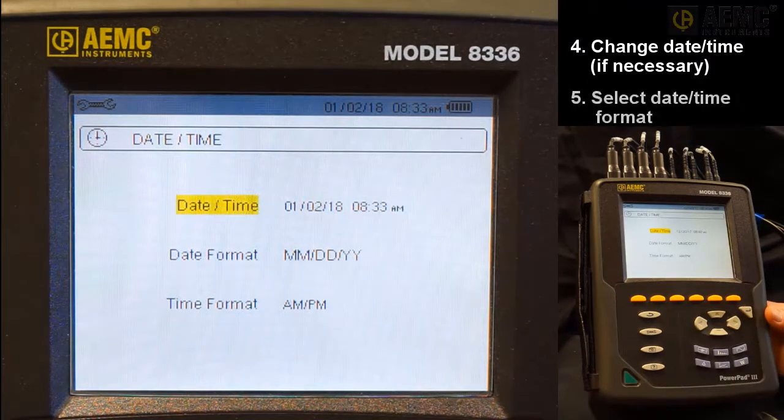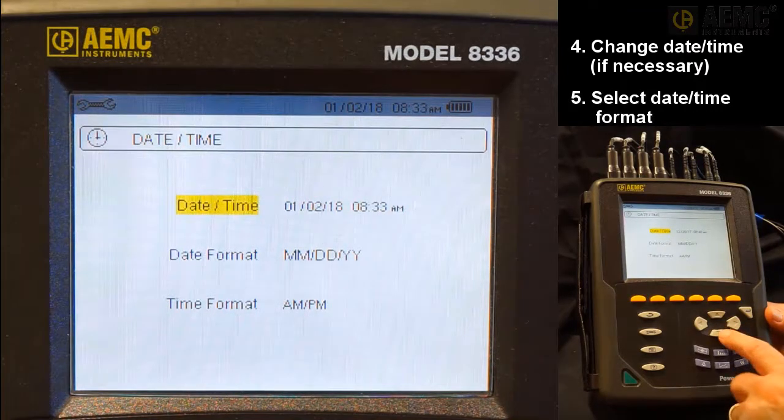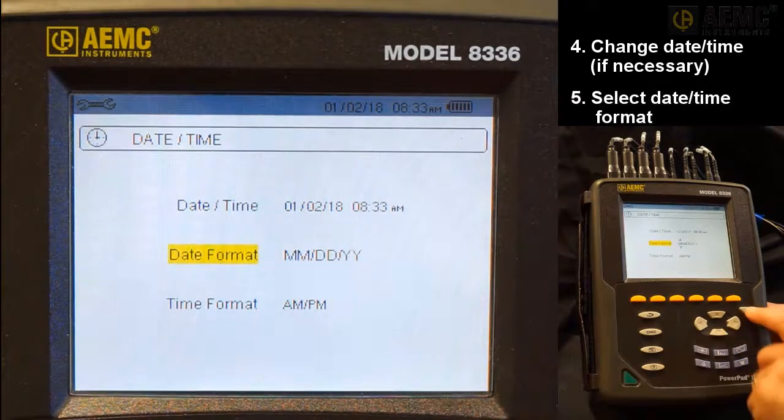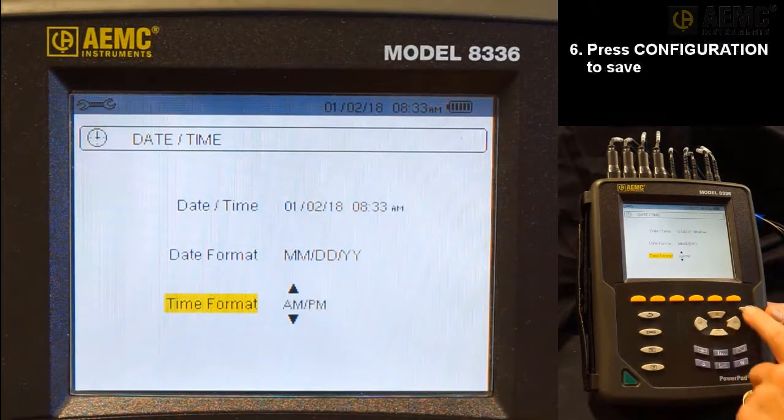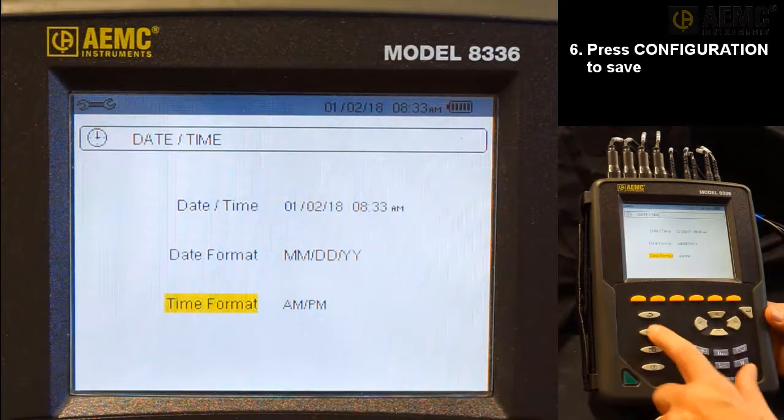The date-time screen also lets you select the date and time formats. To change these, use the arrow and enter buttons to highlight, select, and change the settings. When finished, press the configuration button to return to the configuration options screen.